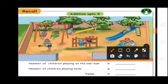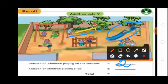Next sum. Children, see the picture. Number of children playing on the seesaw — 2 children, so here write 2. Next one: number of children playing on the slide — only 1, so here write 1. Total: 2 plus 1 equal to 3. So here write 3.